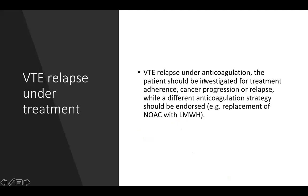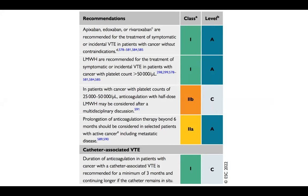If VTE relapses under anticoagulation, investigate for treatment adherence and cancer progression. Consider switching from NOAC to LMWH. Summary recommendations: apixaban, edoxaban, and rivaroxaban are recommended for symptomatic or incidental VTE in cancer patients without contraindications. LMWH is recommended for VTE with platelet count >50,000; half-dose LMWH for platelets 25,000–50,000 (class 2B). Prolongation beyond six months is class 2A. For catheter-associated VTE, minimum three months, longer if catheter remains in situ.